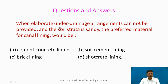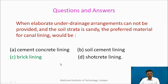Another question: When elaborate underdrainage arrangements cannot be provided and the soil is sandy, the preferred material for canal lining would be: (a) cement concrete lining, (b) soil cement lining, (c) brick lining, (d) shotcrete lining. In these conditions, one may go advantageously for brick lining.